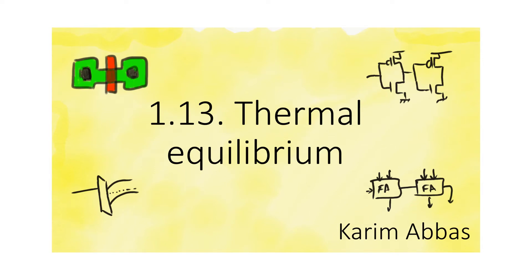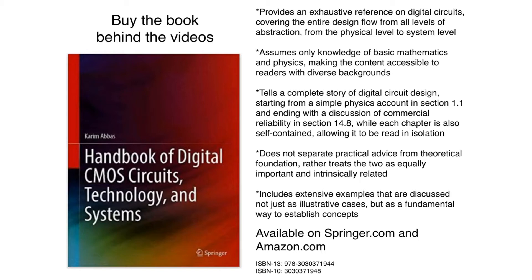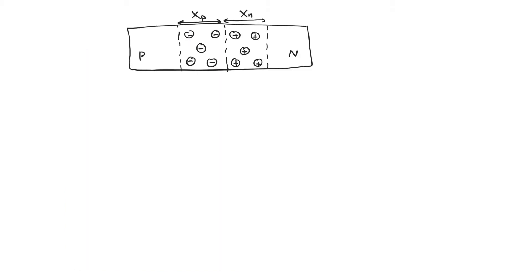We have to start looking at the PN junction in thermal equilibrium to determine how it behaves. At thermal equilibrium, the PN junction builds a depletion region across the interface, some of which lies on the P side and some on the N side. We can divide the PN junction into four sections: the electrically neutral P and N sections, and the depletion region on each side. The neutral regions satisfy n = ND+ and p = NA− on the N and P sides respectively.